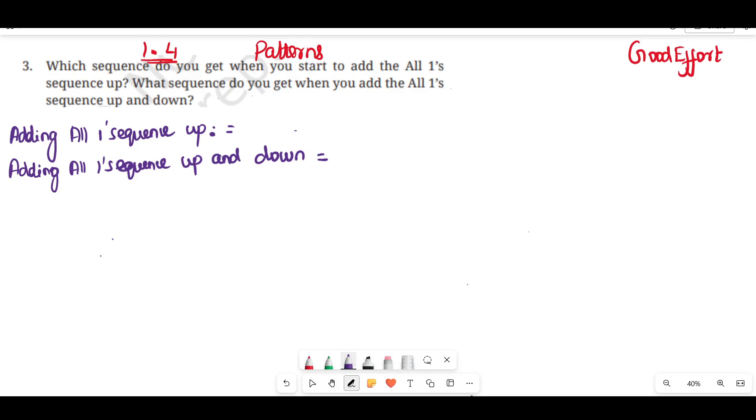Which sequence do you get when you start to add all the 1's sequence up? If all 1's sequence up na enna apiti inrata paarkalaam. All 1's sequence apiti na 1,1,1 in the maathir irukko in the sequence.